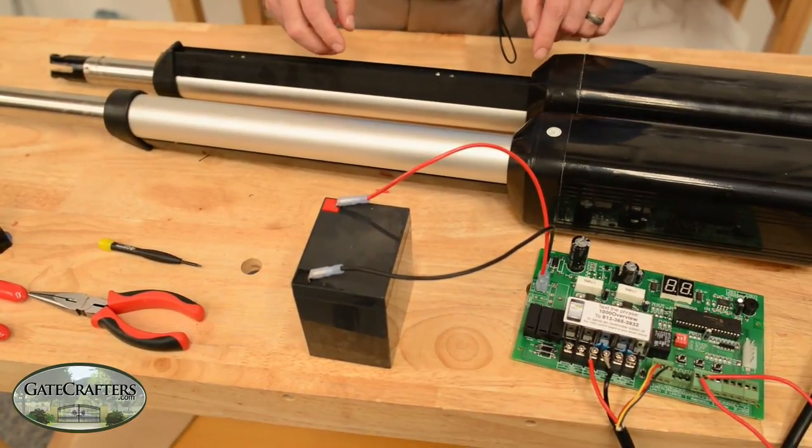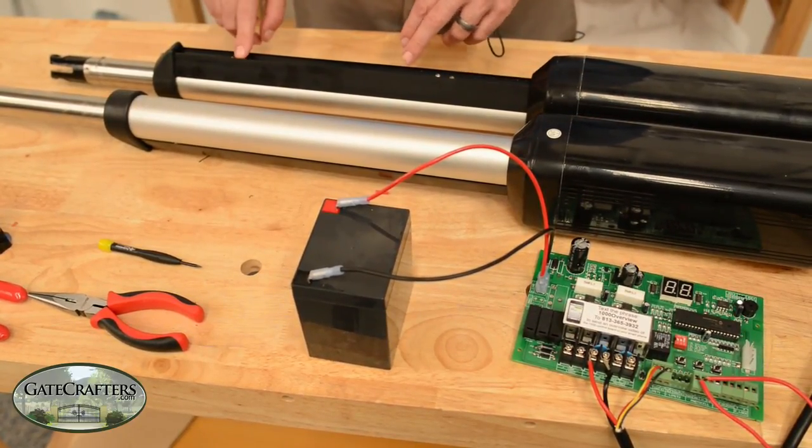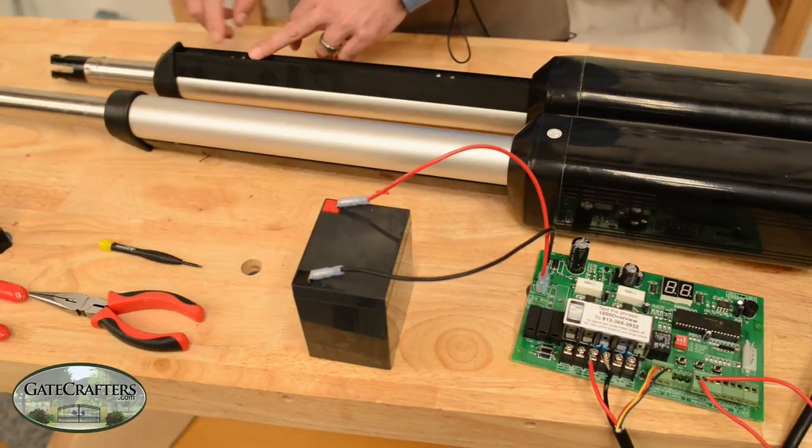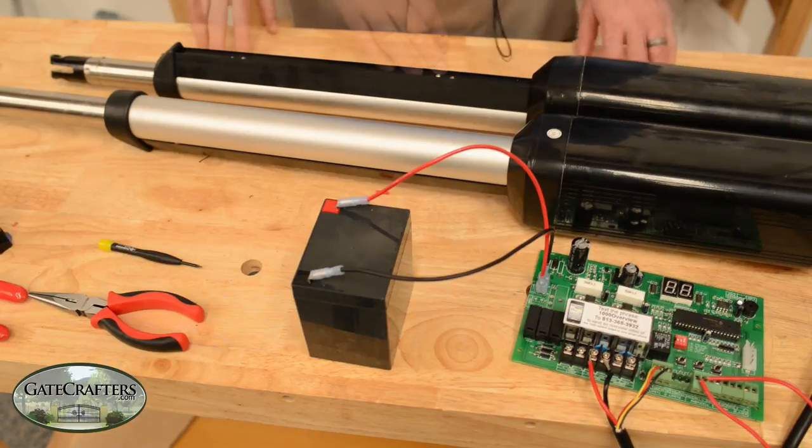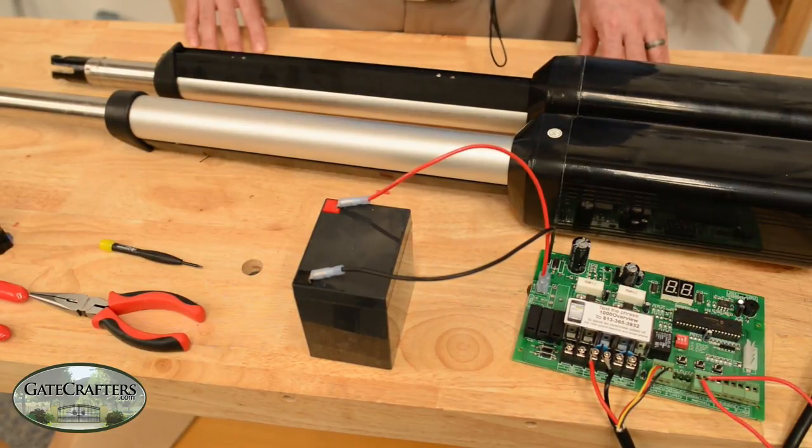The limit switch that is in question in this scenario is this limit because we couldn't get it to extend out. If we couldn't get it to retract in, it would be this limit switch. Or get it replaced under warranty if it's still under warranty.